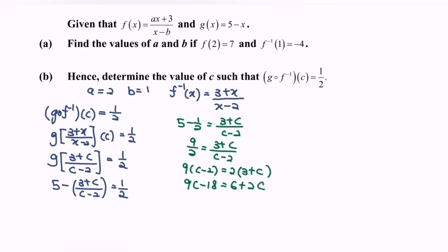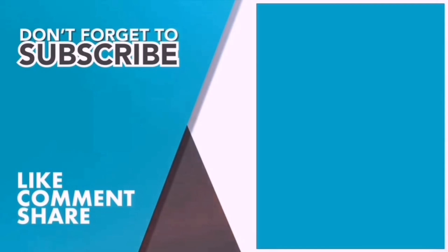Rearrange: 7c = 18 + 6, so c = 24/7. Thank you so much for watching this video. If you found the video useful, kindly consider liking, commenting, sharing, and subscribing.